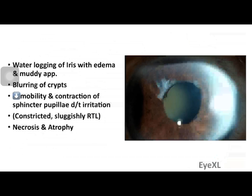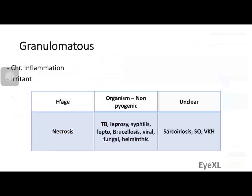As the iris undergoes edema, it takes on a waterlogged, muddy appearance. Normally the iris has crypts — small depressions — but these become blurred because of the edema. Iris mobility is hampered due to loss of function (functio laesa), and the sphincter pupillae contracts, putting the pupil in a state of constriction, sluggishly reacting to light. That is why a patient of uveitis always has a miotic pupil. With prolonged and severe inflammation, iris atrophy and necrosis can develop, visible as a white patch at the 10 to 11 o'clock position.